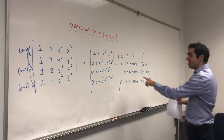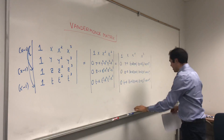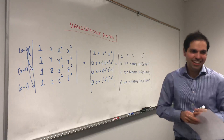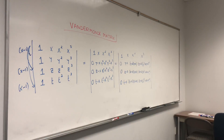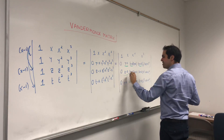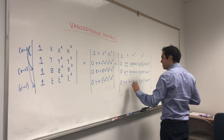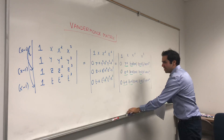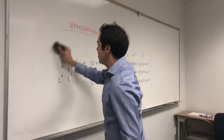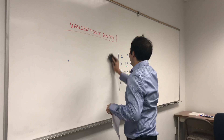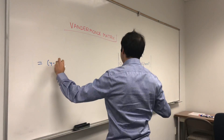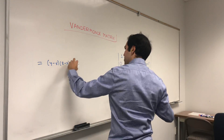All this is nice because there's an extra common factor in every row. In green: y−x appears three times in the y-row, z−x appears in the z-row, and t−x appears in the t-row. All those factors come out, giving us (y−x)(z−x)(t−x) times the remaining determinant.